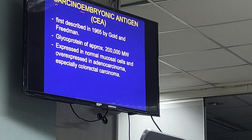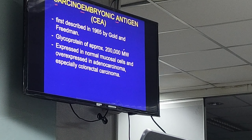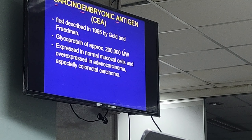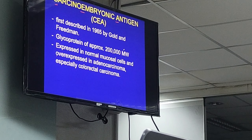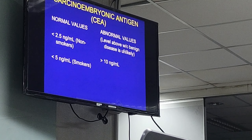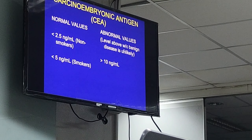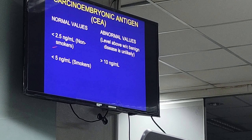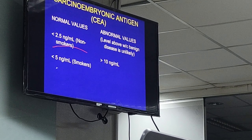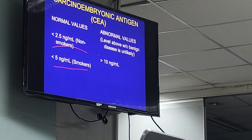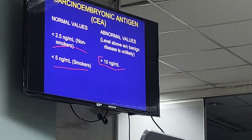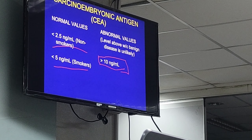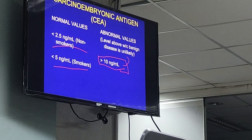CEA was first described in 1965 by Gold and Freedman. It is a glycoprotein of approximately 200,000 molecular weight. It is expressed in normal mucosal cells and overexpressed in adenocarcinoma, especially colorectal carcinoma. The normal value of carcinoembryonic antigen should be less than 2.5 ng/mL for non-smokers, with a higher cutoff for smokers. Levels of more than 10 ng/mL are considered significant, suggesting a likely malignant source.